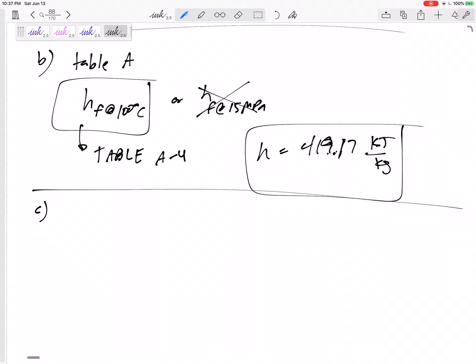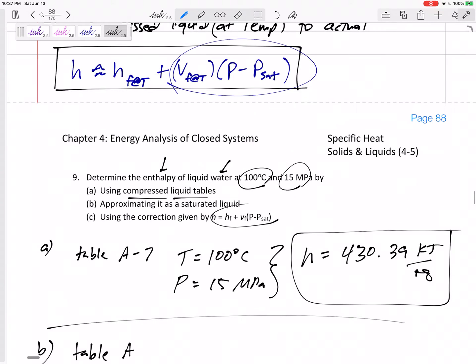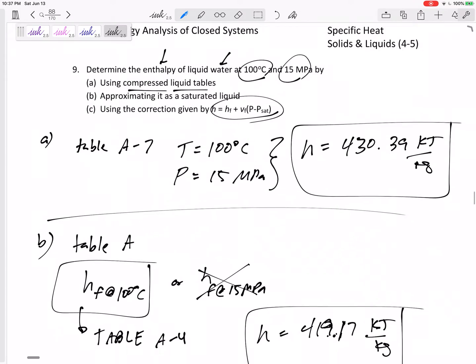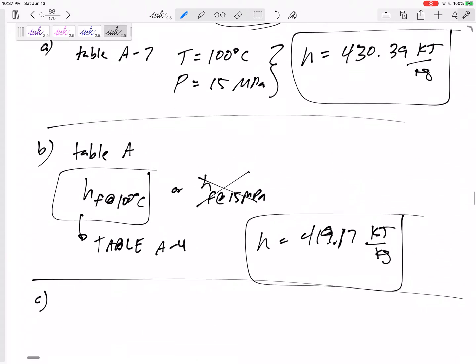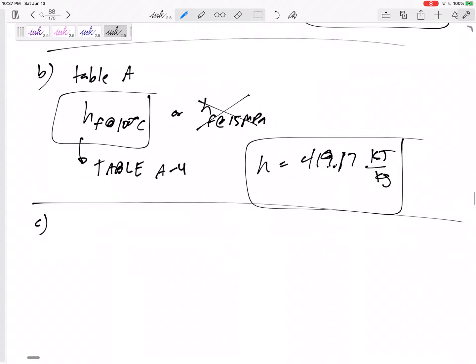But part C, what if we use that correction factor? And they even gave us this equation. H is equal to HF plus VF times P minus P sat. H equals HF plus VF times P minus P sat.